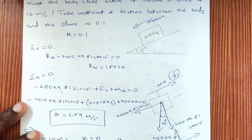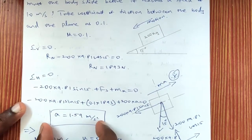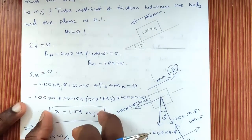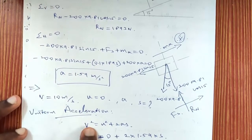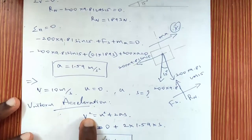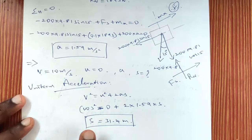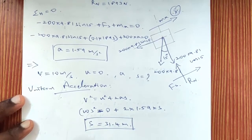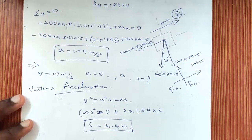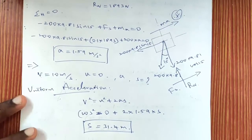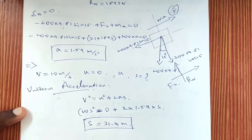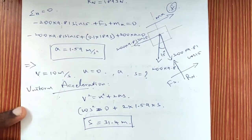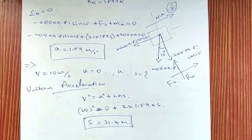In summary, first find the value of acceleration, then using any one of the equations of uniform acceleration, find the displacement. If the problem asks for time, the same procedure applies using the appropriate equation of motion. Thank you.